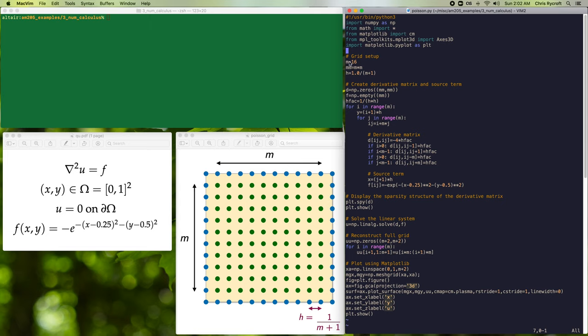So if we look at our program, we first define m equals 16, and then we define a constant mm that's equal to m squared that's equal to our total number of interior grid points. And we then define our grid spacing h. We'll then create the derivative matrix and the source term. So our derivative matrix will be an mm by mm matrix and our source term will be an mm long vector. And we'll define a useful constant h fact to be 1 divided by h squared that appears in a number of the derivative matrix stencil entries.